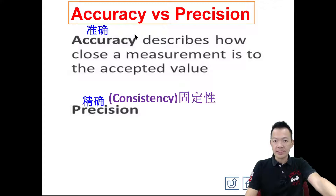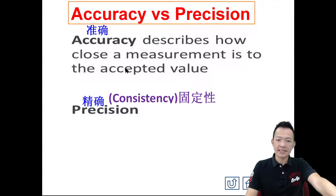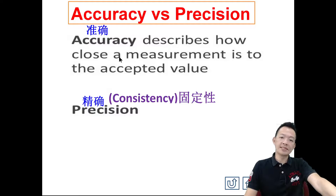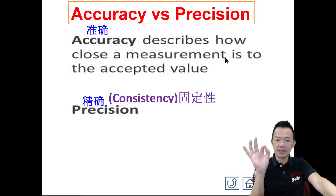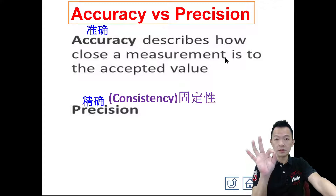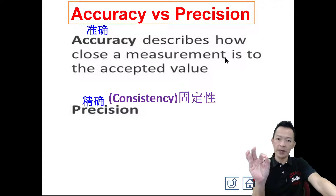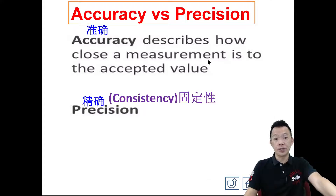Accuracy describes how close a measurement is to the accepted value. So how close a measurement is to the accepted value — the value you measured, how close it is to the true value — the closer it is, the more accurate it is.